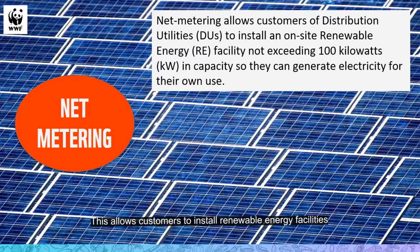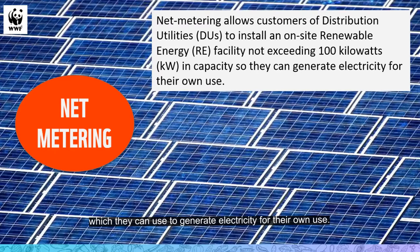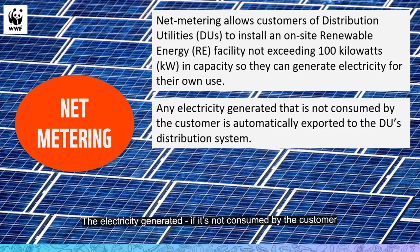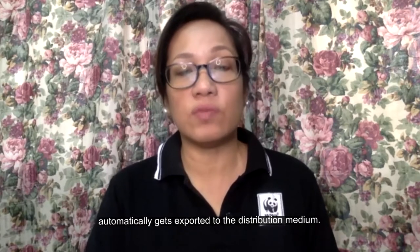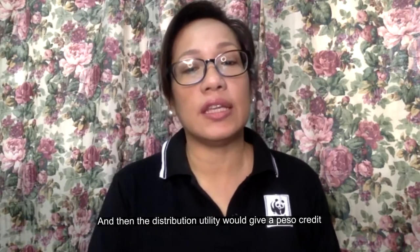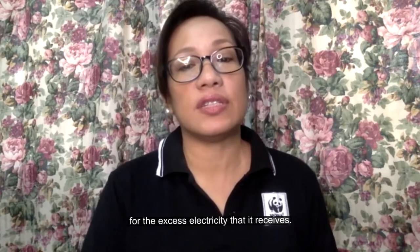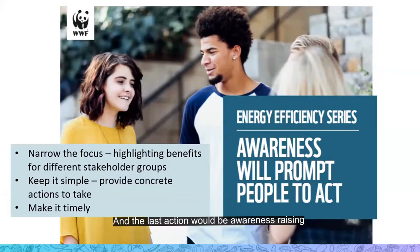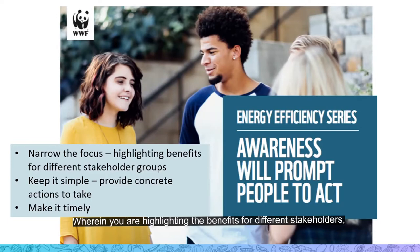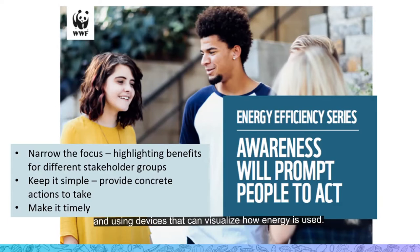Another mechanism businesses can employ to use renewable energy — usually solar energy — is the net metering scheme. This allows customers to install renewable energy facilities not exceeding 100 kilowatts in their own establishments to generate electricity for their own use. If the electricity generated is not consumed by the customer, it automatically gets exported to the distribution utility, which provides a peso credit for the excess electricity received. The fourth action is awareness raising, which would hopefully prompt people to act by highlighting benefits, providing concrete actions, and using devices that can visualize how energy is used.